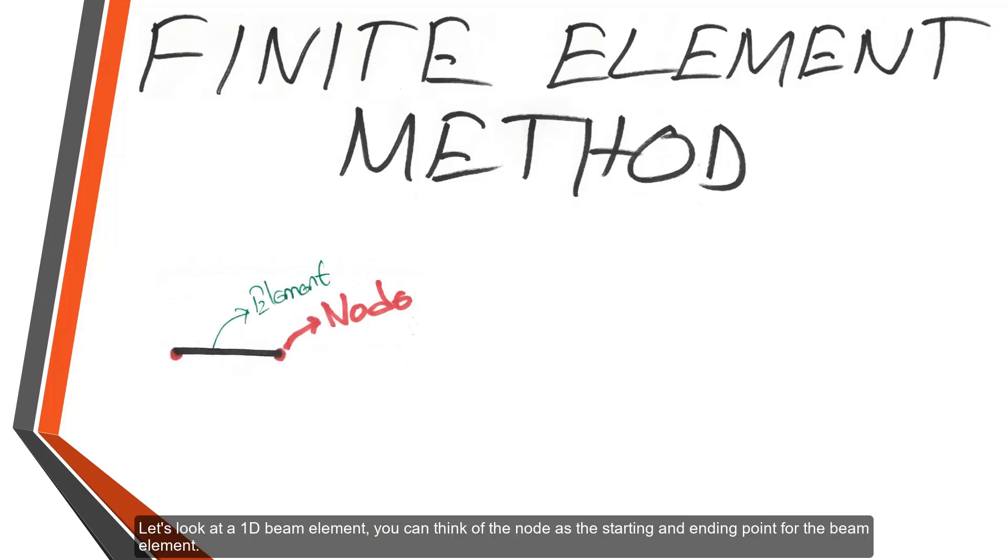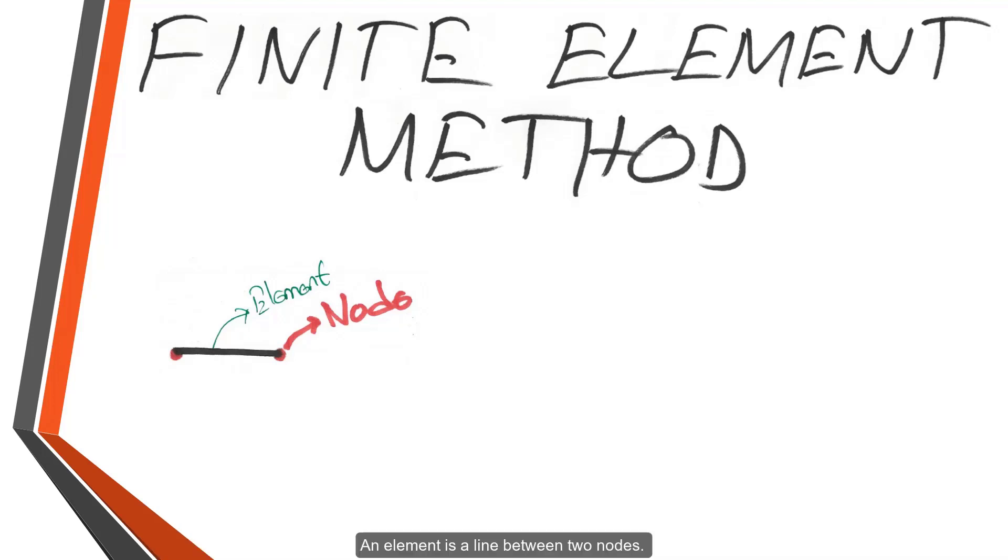Let's look at a 1D beam element. You can think of the node as the starting and ending point for the beam element. An element is a line between two nodes, but here may also be mid nodes. Don't just think of it as the starting and ending point. So, let's assume we have a midpoint here. Then we will have two elements on the beam. One will be here and the second one will be here.